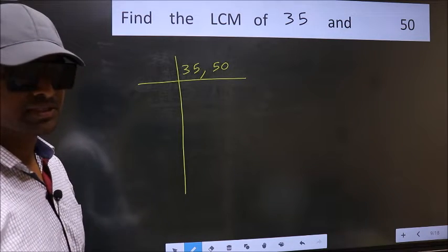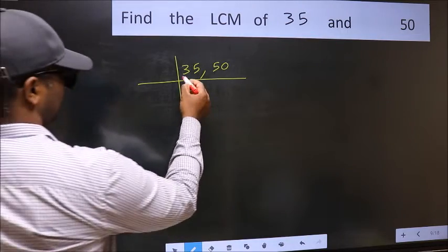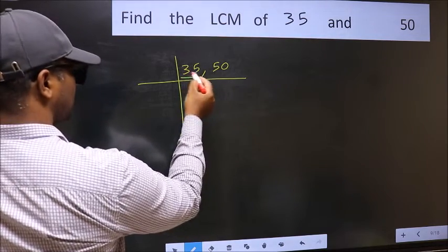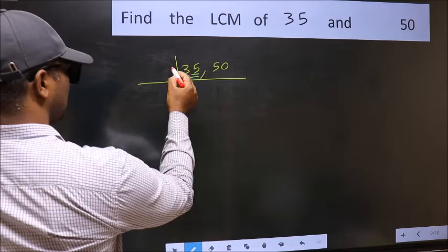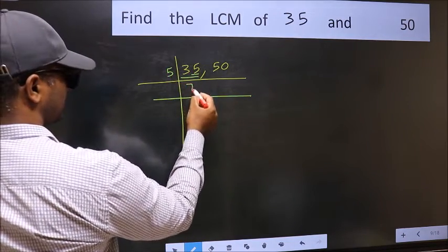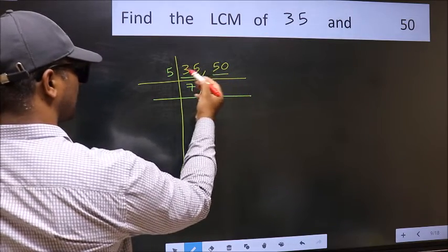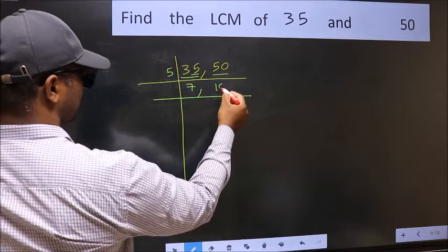Now you should focus on the first number, which is 35 here. In this number, last digit is 5, so take 5. When do we get 35 in the 5 table? 5 times 7 is 35. The other number 50, when do we get 50 in the 5 table? 5 times 10 is 50.